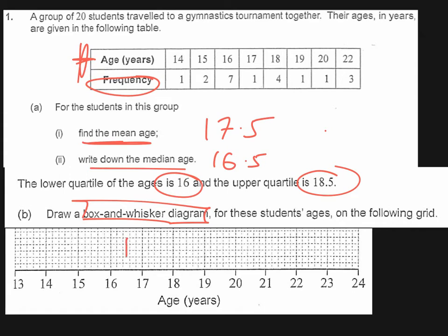That's going to go up to 18.5, which is here, which is the upper quartile. And then it's going to go down to 16, which is the lower quartile, which is here. So that is our box.